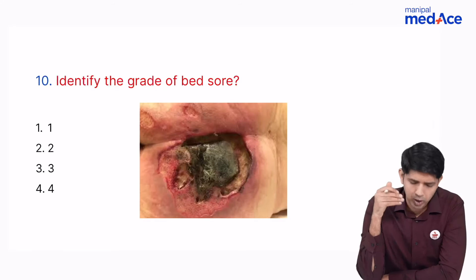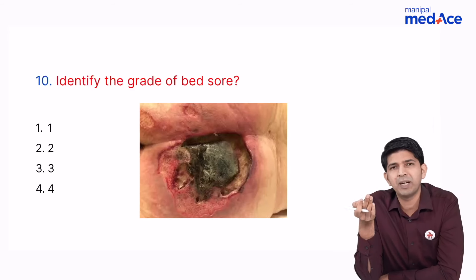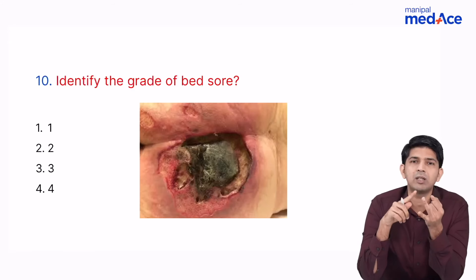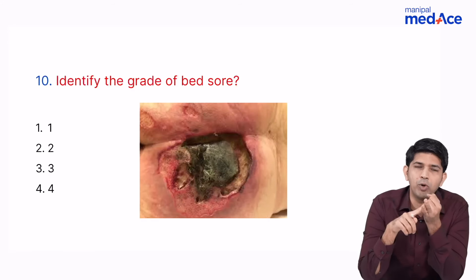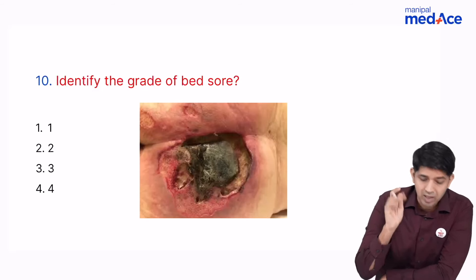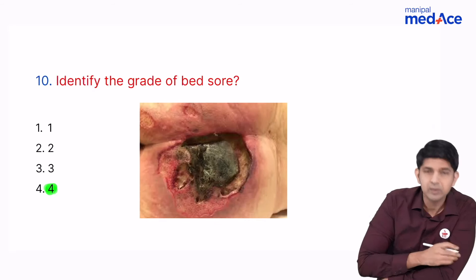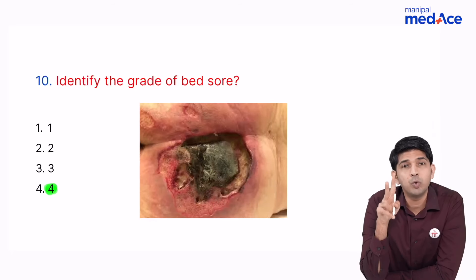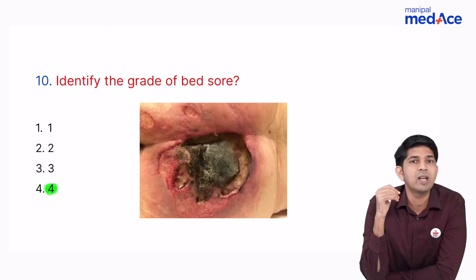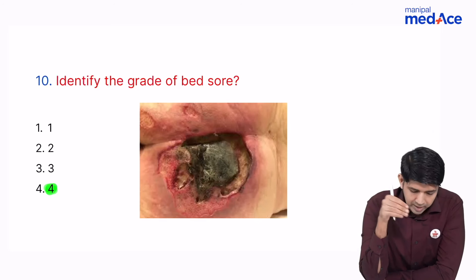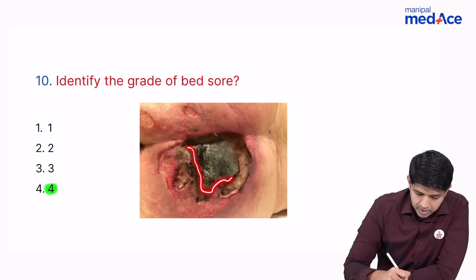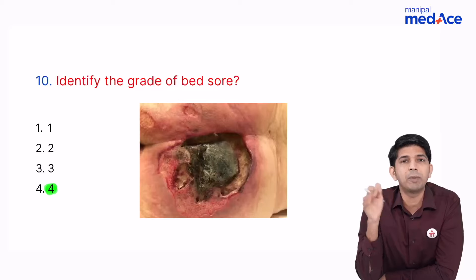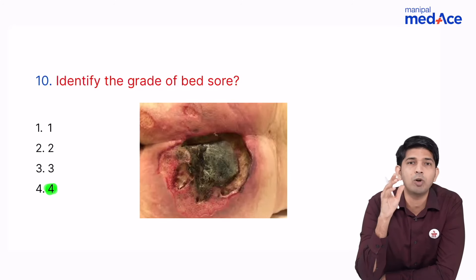An image of a bedsore was given and you were asked to grade it. If you can see muscle or bone, it is grade 4. Grade 1 is non-blanchable erythema, grade 2 involves the skin, grade 3 is subcutaneous involvement, and grade 4 involves muscle or bone. The image showed an eschar reaching the level of muscle and possibly bone — making it a grade 4 bedsore.